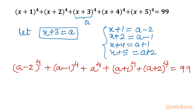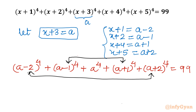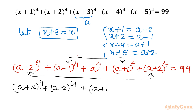Now let us consider the first and last brackets together, and the second and second-last brackets together. So we group (a + 2)⁴ + (a − 2)⁴, then (a + 1)⁴ + (a − 1)⁴, and the middle term a⁴, all equal to 99.